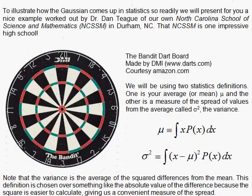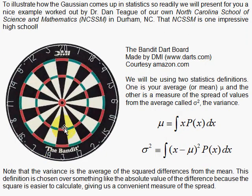As we head toward a dartboard, the Bandit dartboard made by DMI, we're pretty good dart players so we hit the center more than we hit the outer region. We'll use this dartboard to analyze it and arrive at the Gaussian in statistics.